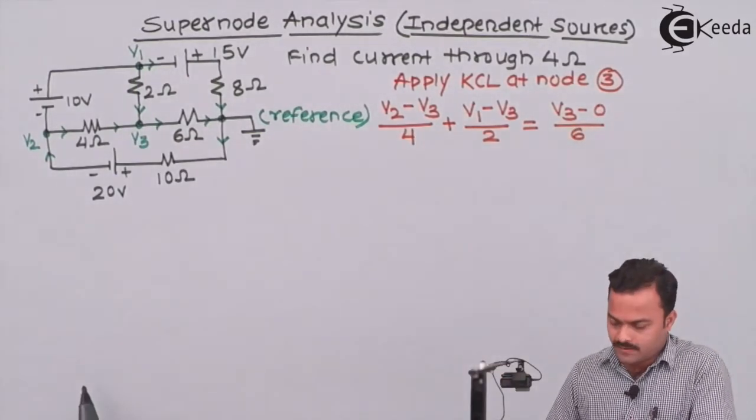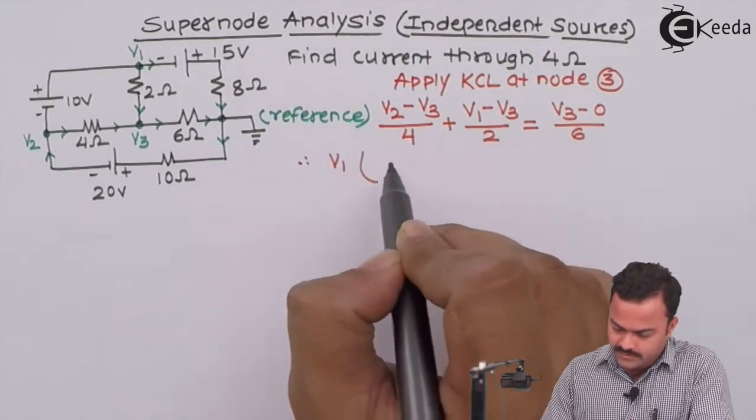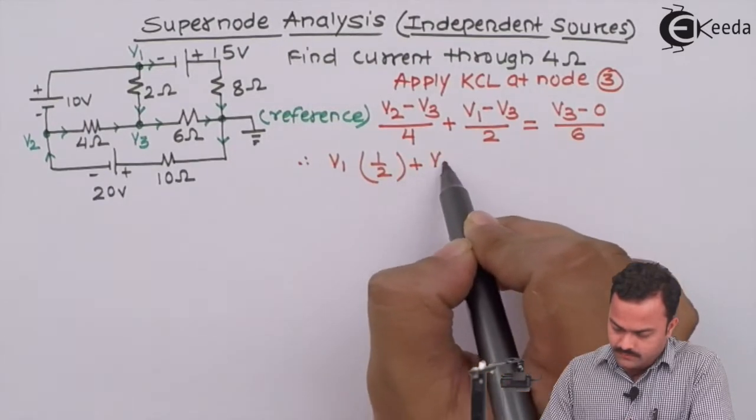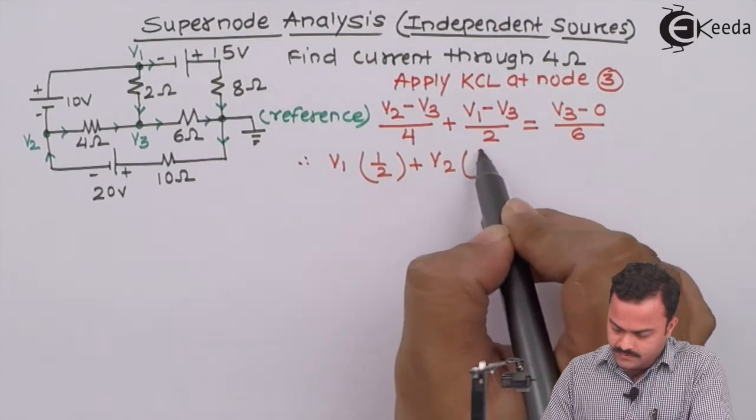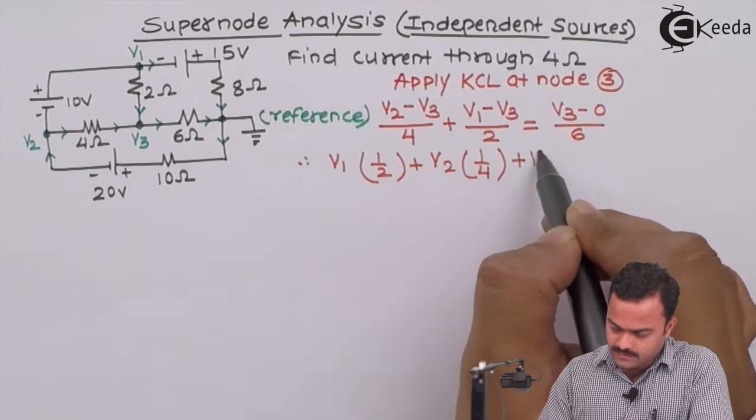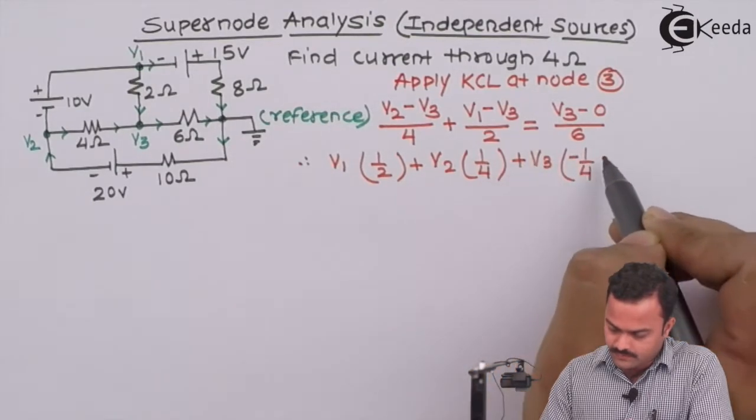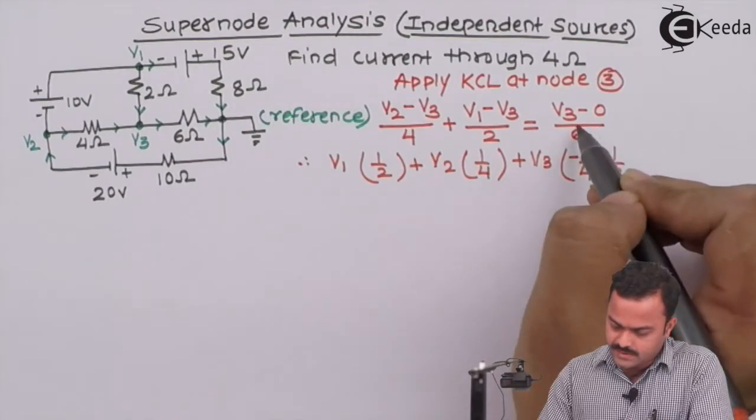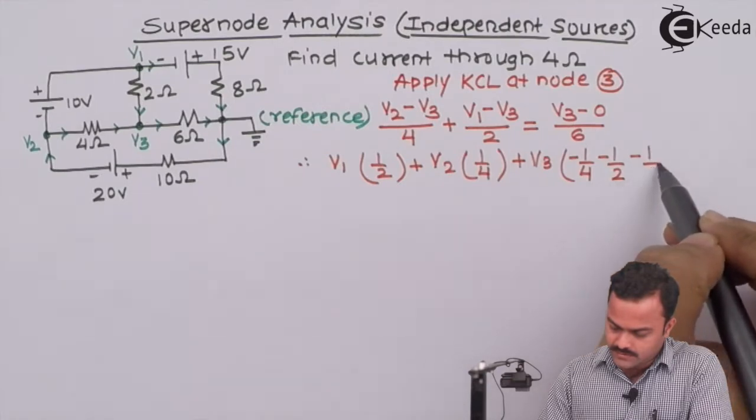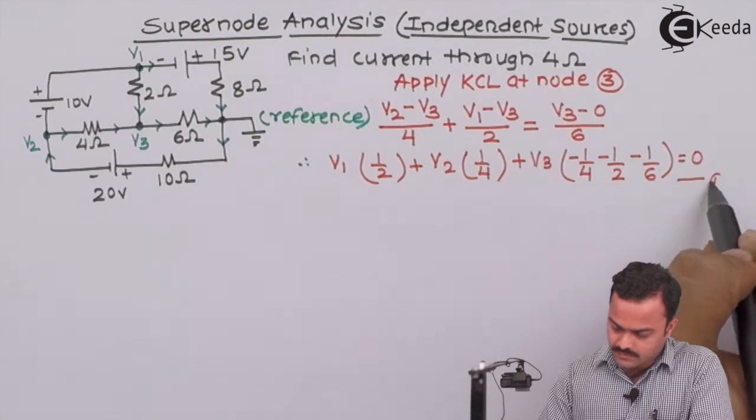The straightforward equation we'll get after simplifying: V1 coefficient is 1 by 2, V2 coefficient is 1 by 4. And if I take V3 on this side, I will get V3 coefficients as minus 1 by 4 minus 1 by 2 already present, and this will go on this side becomes minus 1 by 6 equal to 0 as equation number 1.